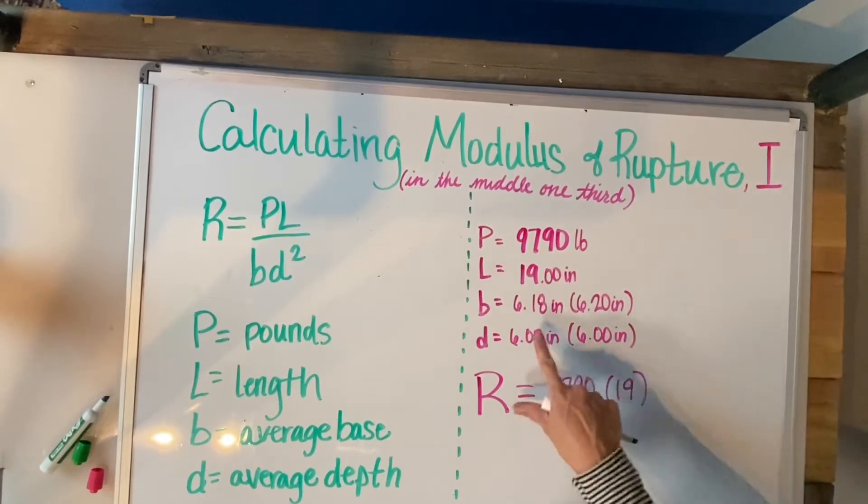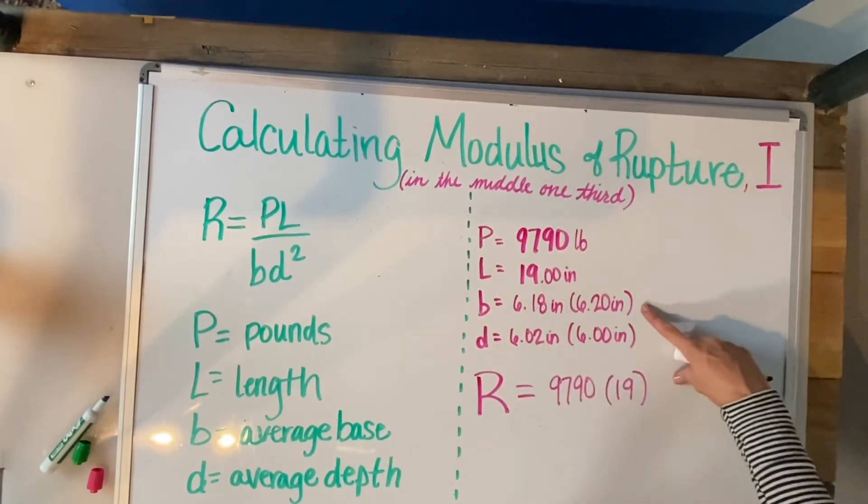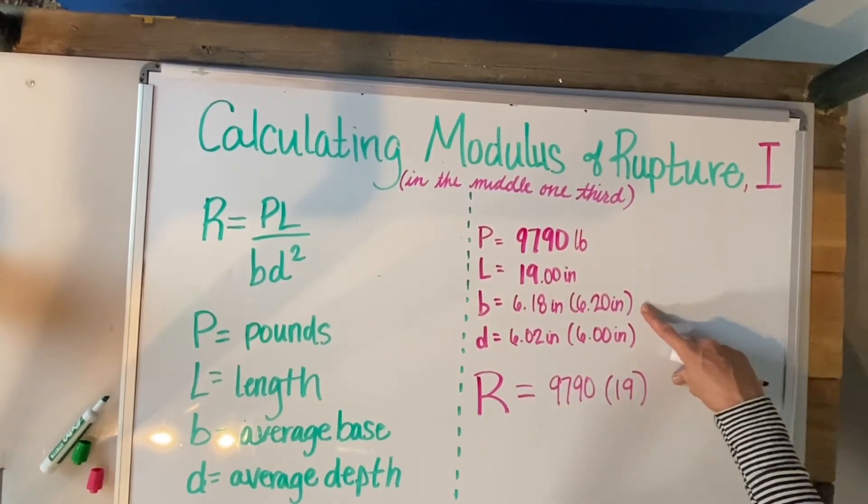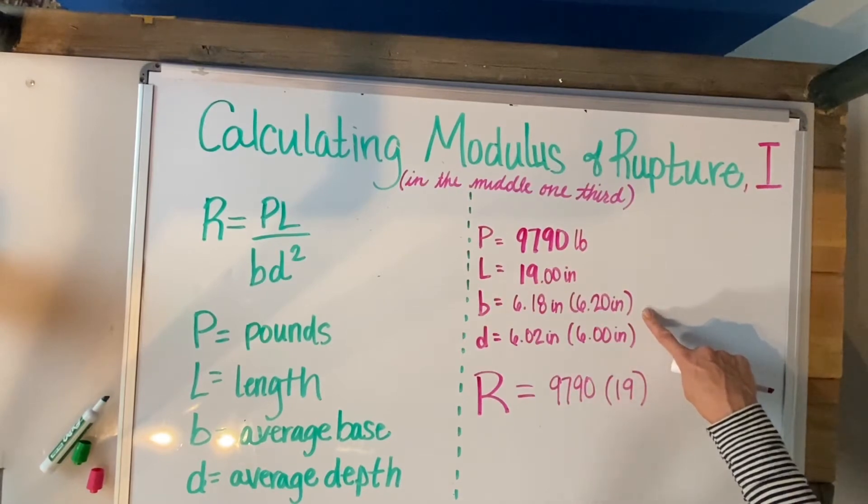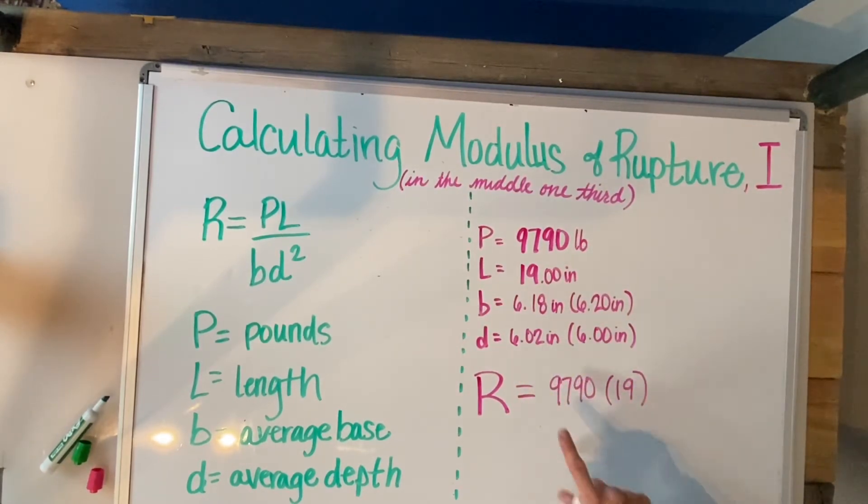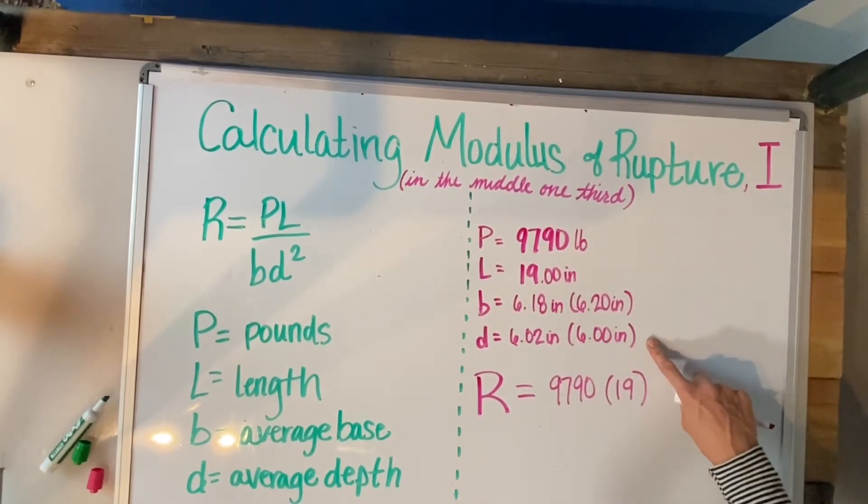Average base is 6.18 which we rounded to the nearest 5 per the ASTM, so we're going with 6.20 inches. Then the depth 6.02 is what I got, again rounding down to that nearest 5 of 6.00 inches.